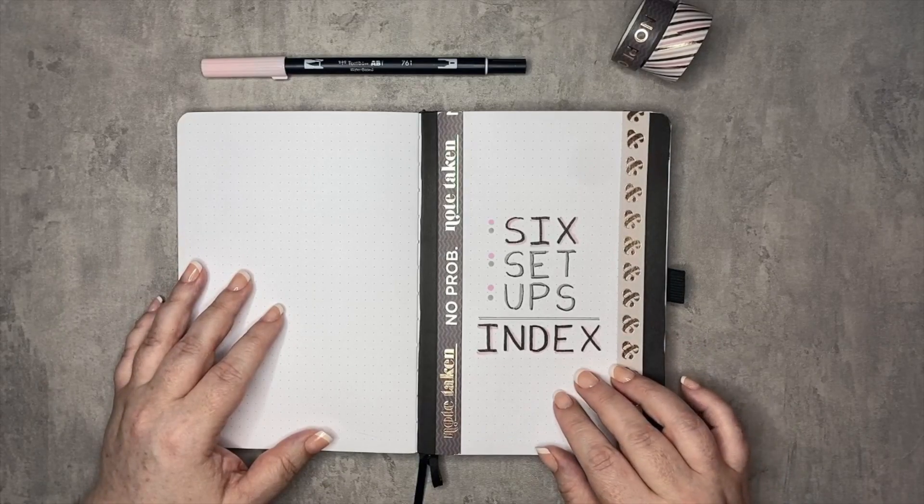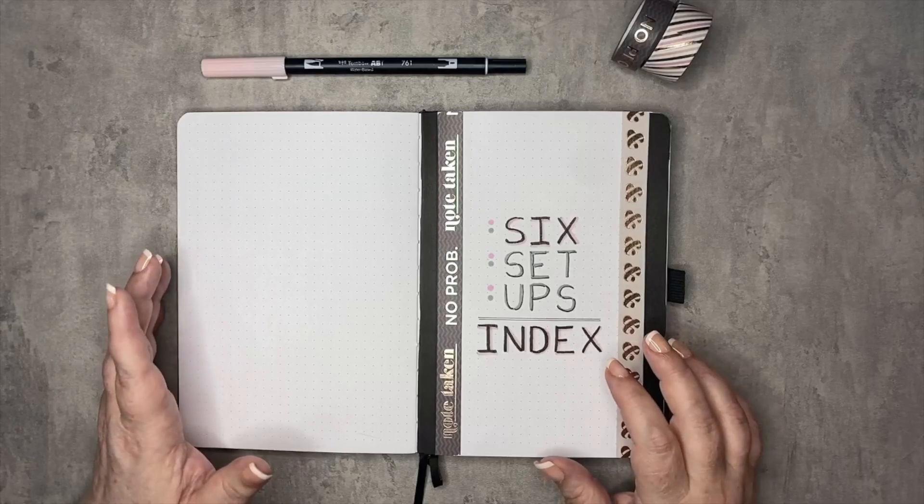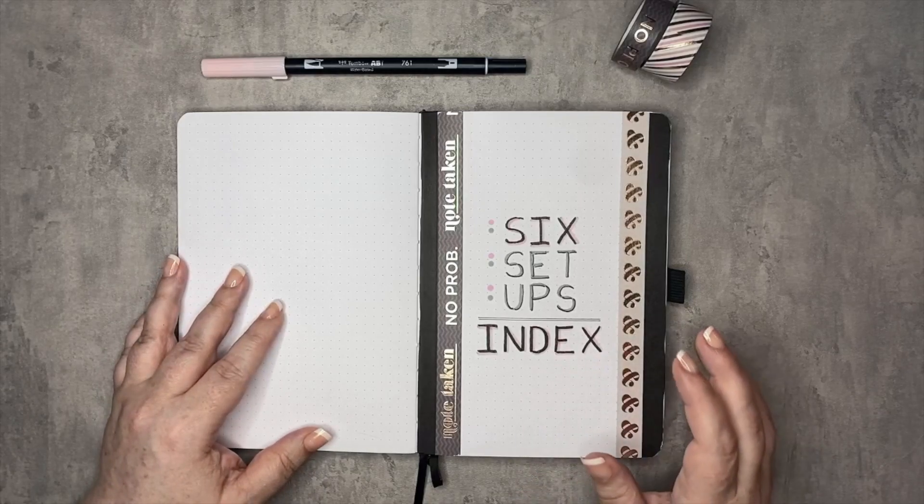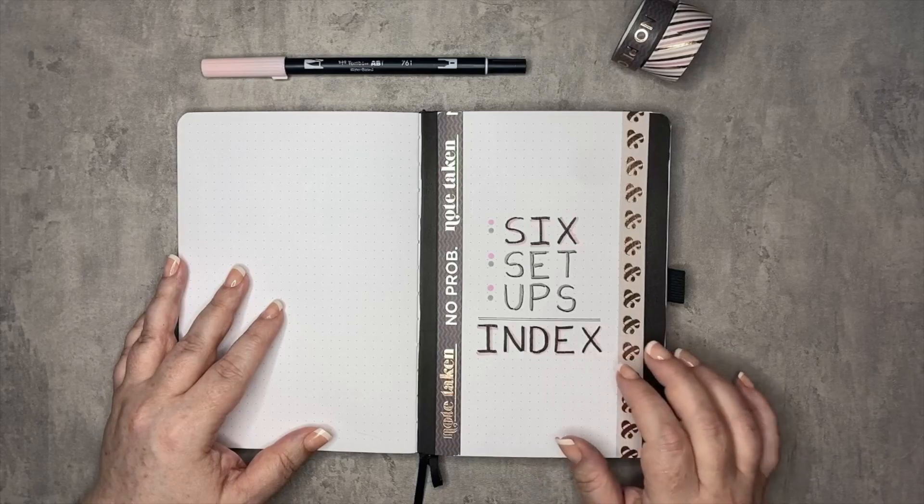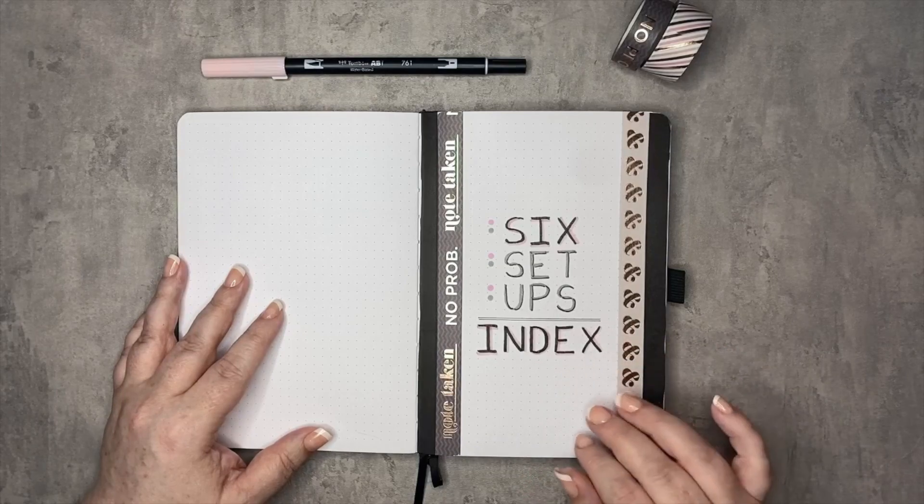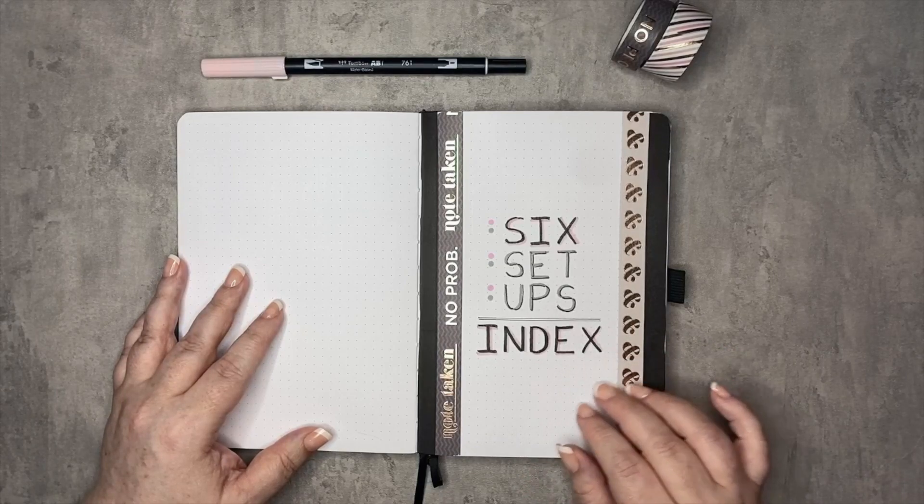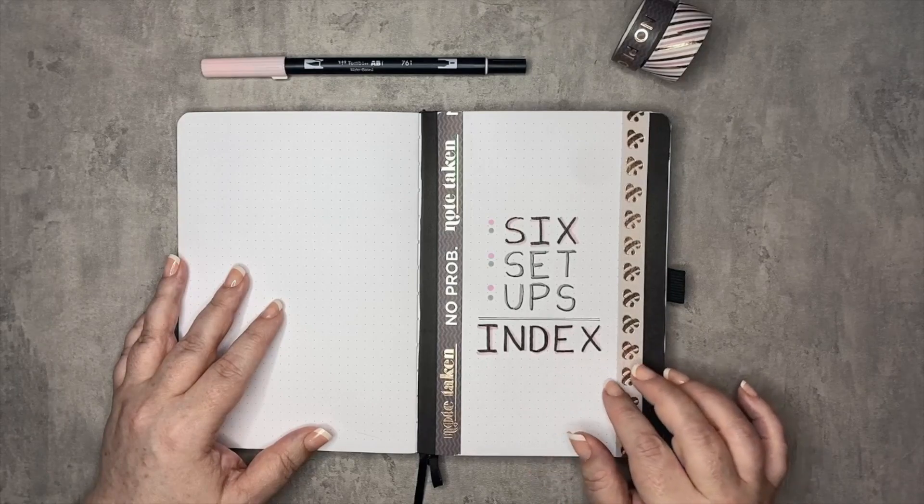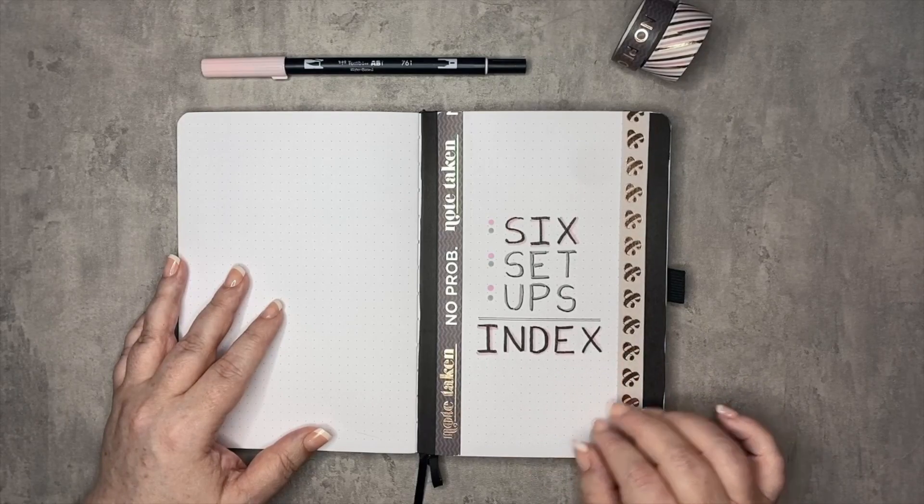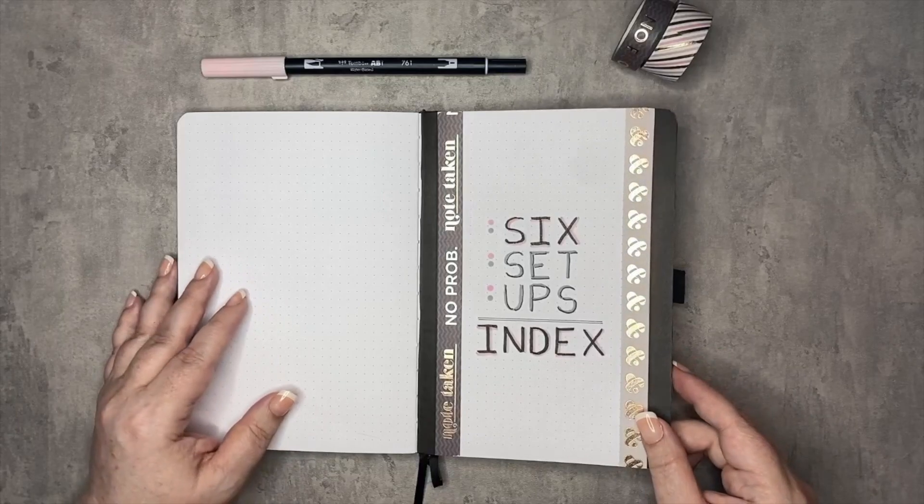But again as we start getting ready to set up our bullet journals I thought I would start just a quick series, not too overwhelming, of just six setups and we'll carry on from index to keys to weeklies and dailies and monthlies over the next few weeks as we start getting ready for the end of the year. So let's go ahead and look at some of these indexes.